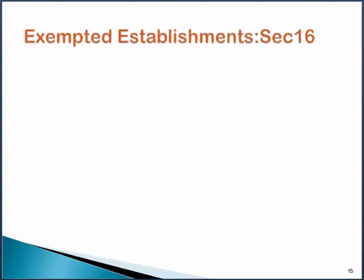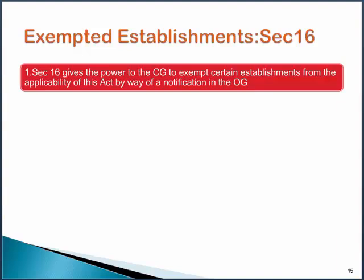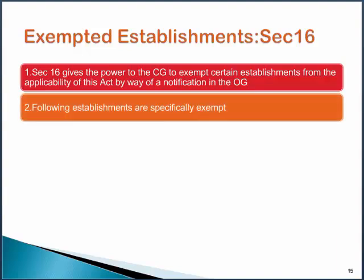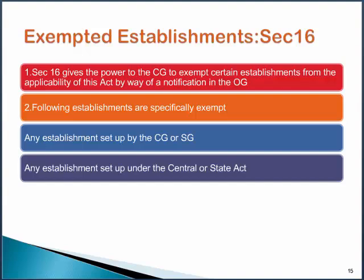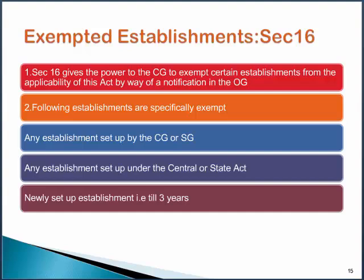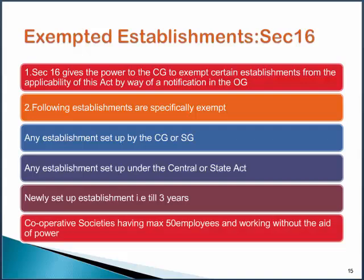What are specifically exempted establishments covered under Section 16? Section 16 gives the power to the central government to exempt certain establishments from the applicability of this Act by way of a notification in the Official Gazette. Only those establishments stated by the central government in the notification will not be liable to make any contribution to Provident Fund, Pension, or Life Insurance. The following establishments are specifically exempt: any establishment set up by the central government or the state government; any establishment set up under a central or state act; any newly set up establishment till 3 years; and any cooperative society having maximum 50 employees and working without the aid of power.